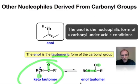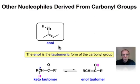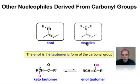However, the enol tautomer is a nucleophilic form and it can be present even under acidic conditions. In addition to the enol, a closely related species where we've replaced oxygen with nitrogen is the enamine.